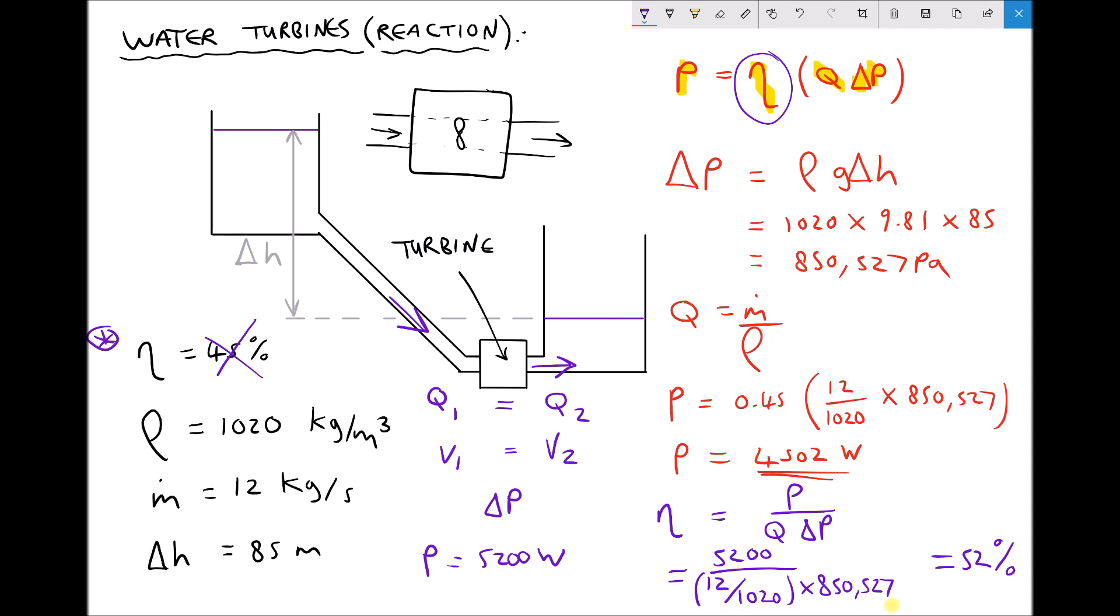So we can use this formula in a number of ways. We can use it to determine power output when our efficiency, volume flow rate, and pressure drop are known. Or we can use it to determine efficiency when the power output, volume flow rate, and pressure drop are known. Noting that the absolute maximum value for our efficiency would be 59.3% due to Betz' limit as established by Betz' law.